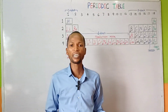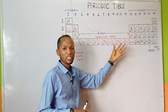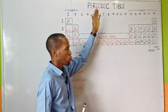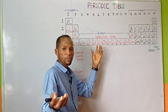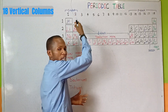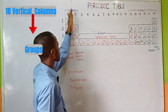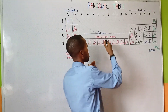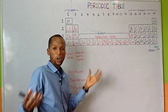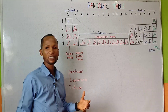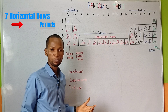Now let's consider the modern periodic table. Elements in the periodic table are classified into vertical columns and horizontal rows. In the periodic table we have 18 vertical columns called the group. We have group 1, group 2, group 13 to 18. Also the periodic table contains 7 horizontal rows called the period.